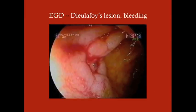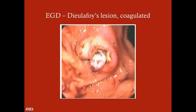Here's a Dieulafoy's lesion — it kind of looks like a varix, but it's not. And here's another one after it's been coagulated. You can see the dead tissue around it, showing that the bleeding has been stopped.